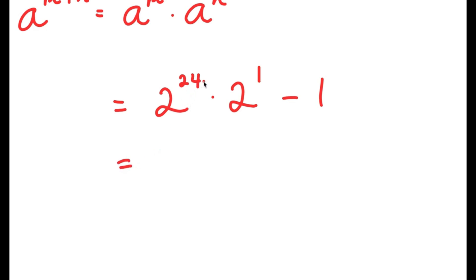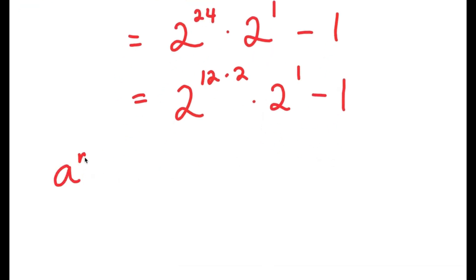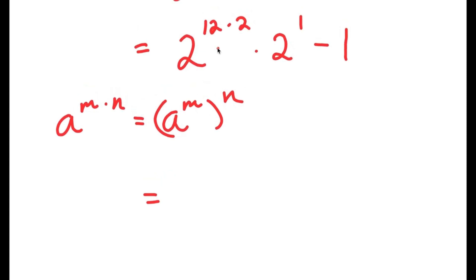For 2 to the power of 24, I can rewrite this as 2 to the power of 12 times 2. Another property of exponents is that if I have something in the form a to the power of m times n, this is equal to a to the power of m to the power of n. So 2 to the power of 12 times 2 is going to equal 2 to the power of 12, to the power of 2. And I have this times 2 minus 1.